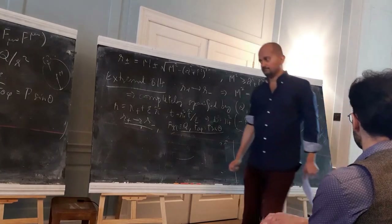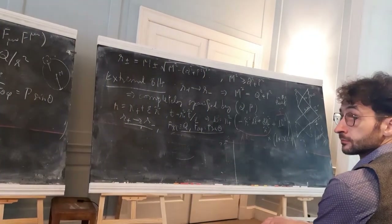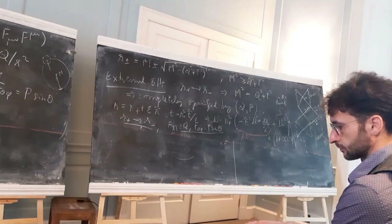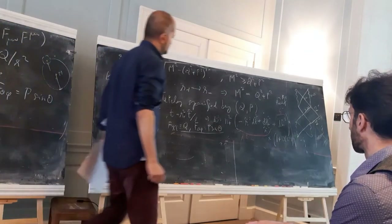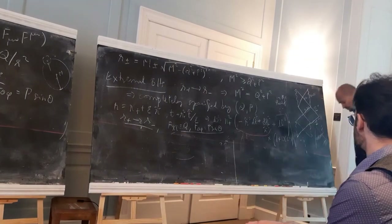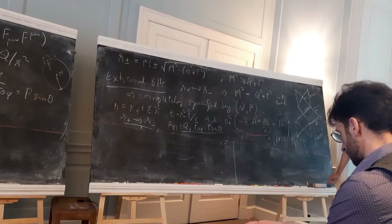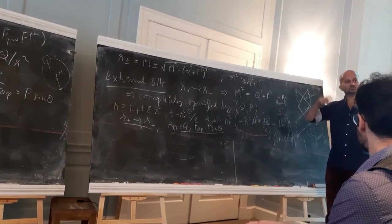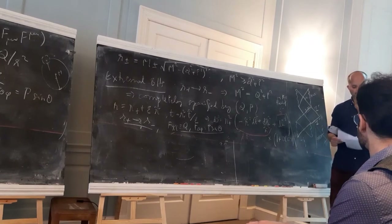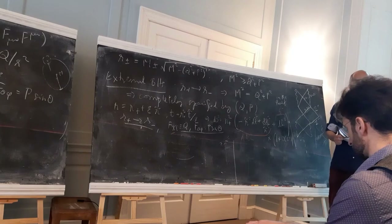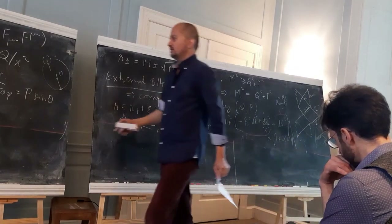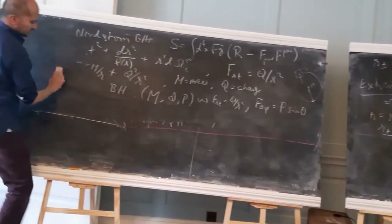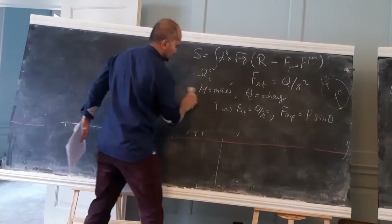There is always an AdS₂ factor in the near-horizon geometry of extremal black holes. Today we won't discuss extremal black holes further — they will come back next week.